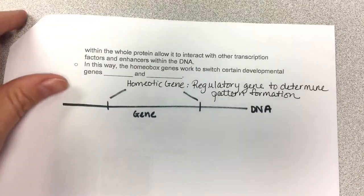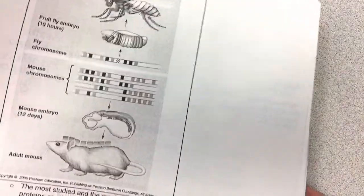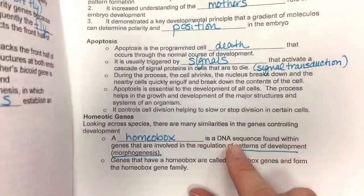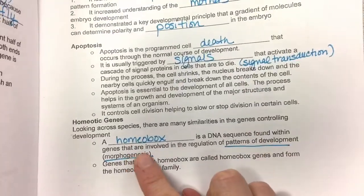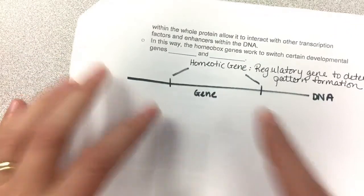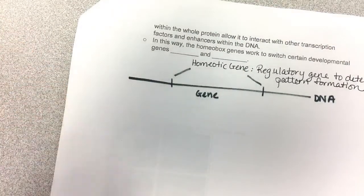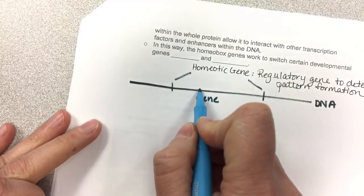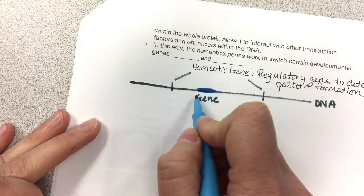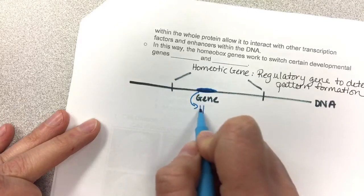The homeobox is a DNA sequence found within genes that are involved in the regulation of patterns of development. So going to this picture — here's your gene. A homeobox is a sequence found within the gene, so it's part of the gene. This part here is your homeobox.